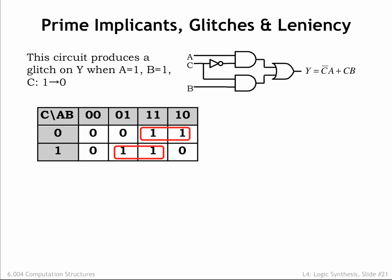We can also use K-maps to help us remove glitches from output signals. Earlier in the chapter we saw this circuit and observed that when A was 1 and B was 1, then a 1-0 transition on C might produce a glitch on the Y output as the bottom product term turned off and the top product term turned on.